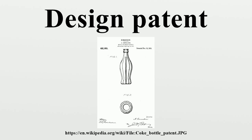Trademarks and trade dress are used to protect consumers from confusion as to the source of a manufactured object. To get trademark protection, the trademark owner must show that the mark is not likely to be confused with other trademarks for items in the same general class. Trademarks can last indefinitely as long as they are used in commerce. Design patents are only granted if the design is novel and not obvious for all items, even those of different utility than the patented object.